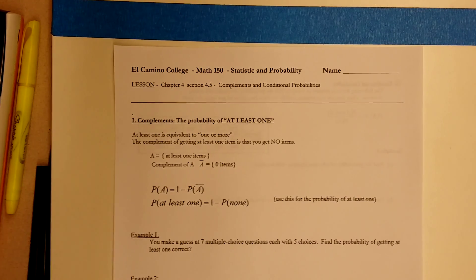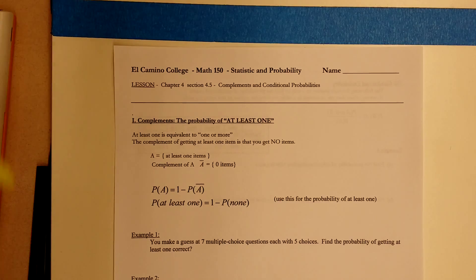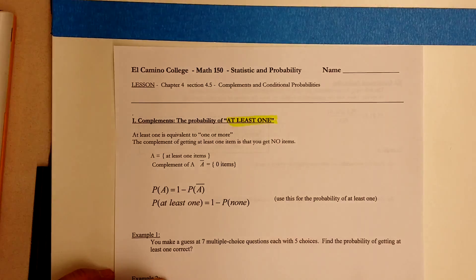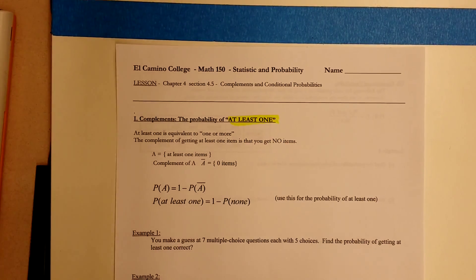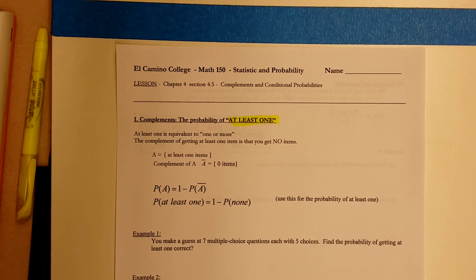Now, if you recall the last problem in section 4.4 multiplication rule, it has a question about 'at least one.' I know that's a pretty confusing area of 4.4, so I want to put this under section 5.5 and go over more formal definitions so that you can understand how to find the probability of at least one item.